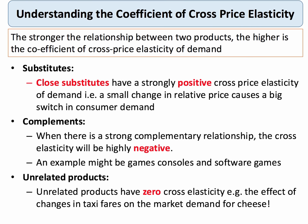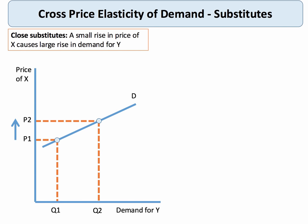With substitutes, the cross price elasticity will be positive, and the closer the products are as substitutes, the stronger the coefficient of elasticity. With complements, the cross elasticity is always negative, and if they're close complements — for example, games consoles and associated software — we'd expect a highly negative cross price elasticity. Also keep in mind that unrelated products have a zero cross price elasticity; for example, a change in taxi fares has no effect on the market demand for cheese.